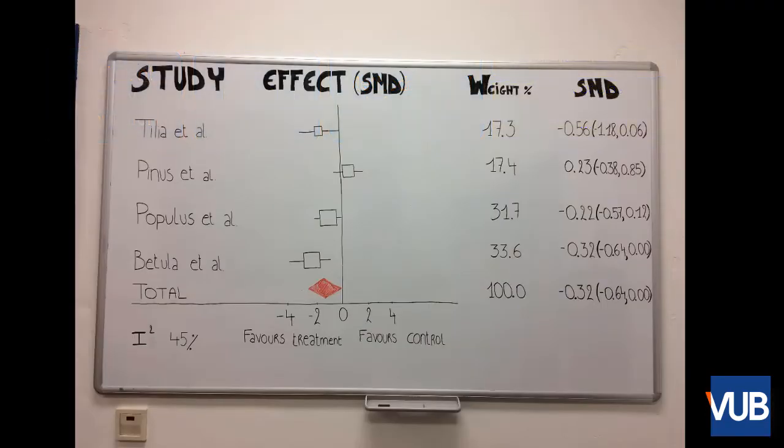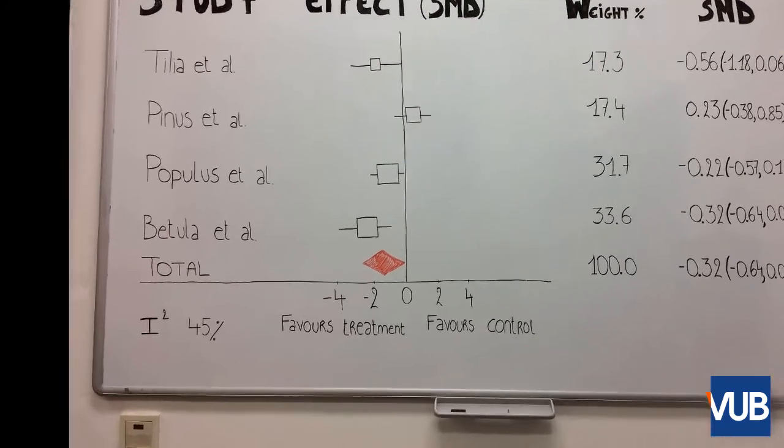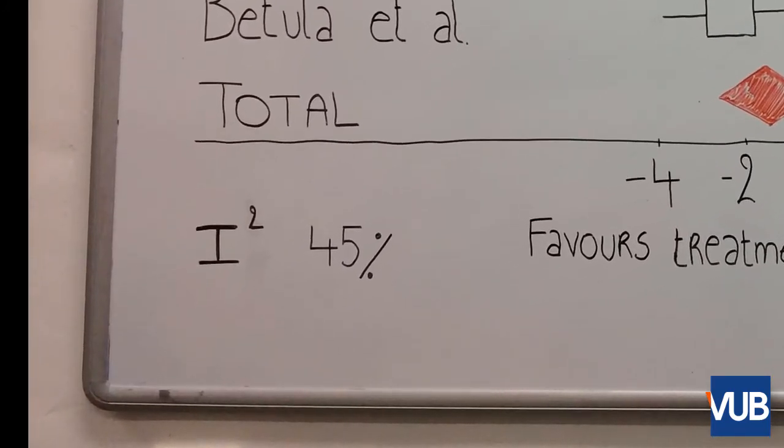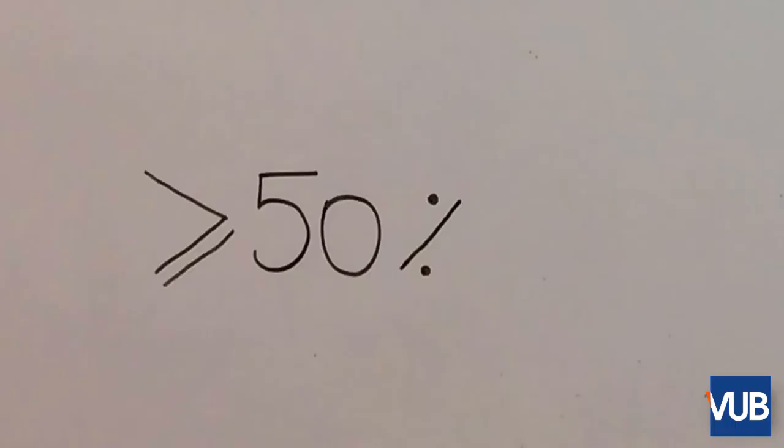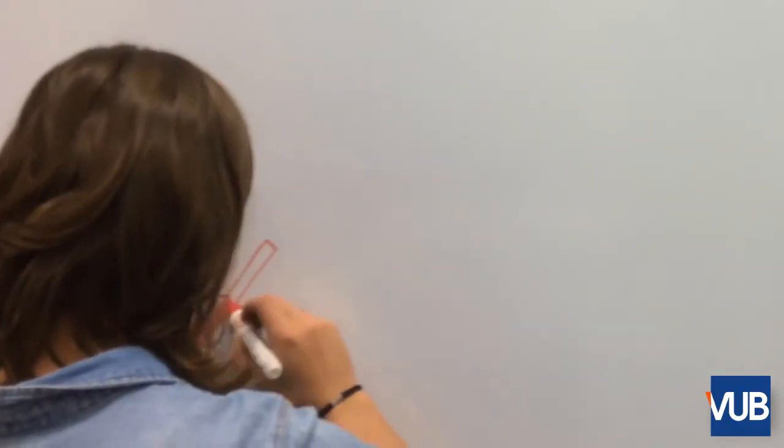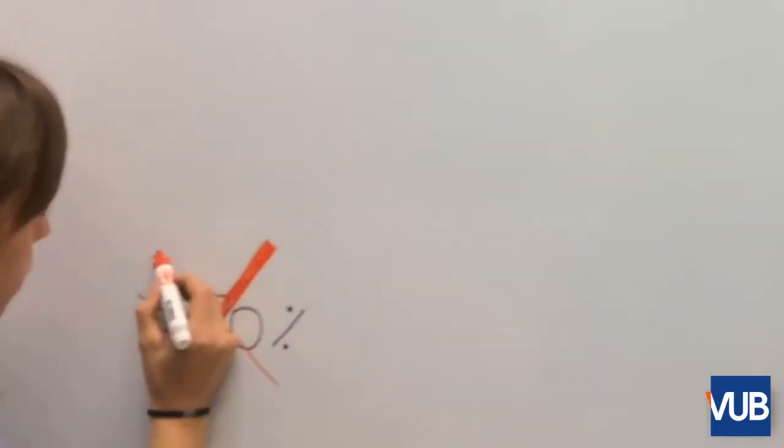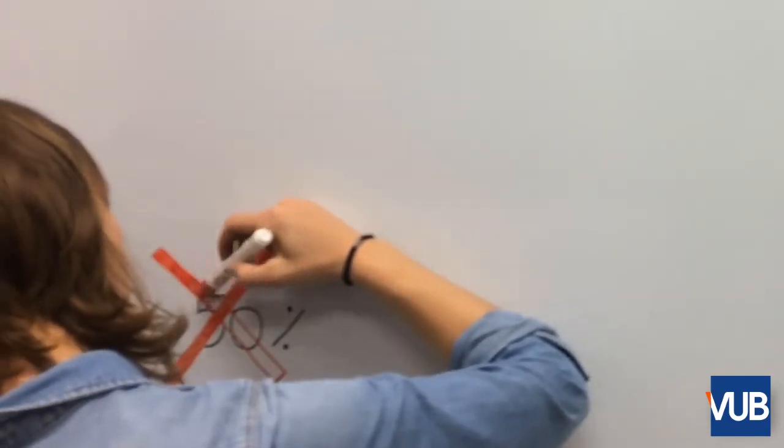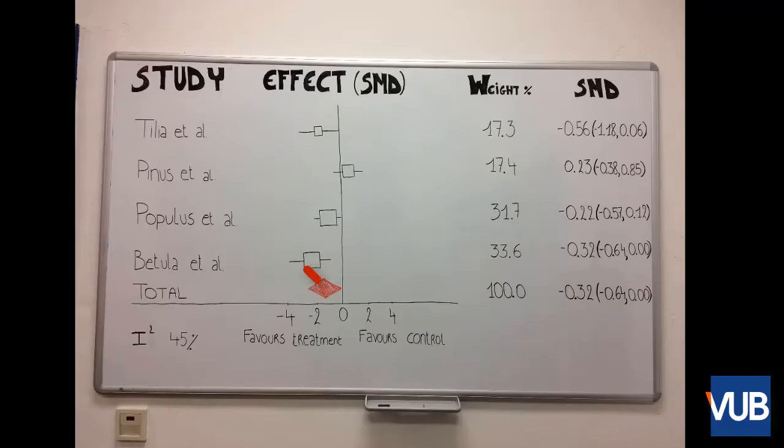In the forest plot, the heterogeneity across the studies is presented as the I-square. I-square can range from 0 to 100%. The lower the heterogeneity, the more comparable the studies and results are. If this value exceeds the threshold of 50%, heterogeneity may be too big to compare the results and thus, you may not interpret the pooled effect size.